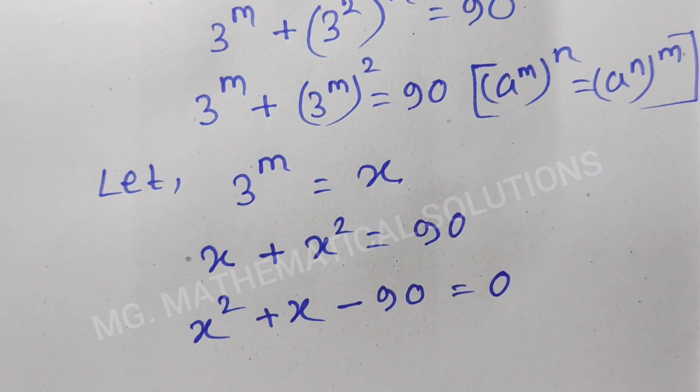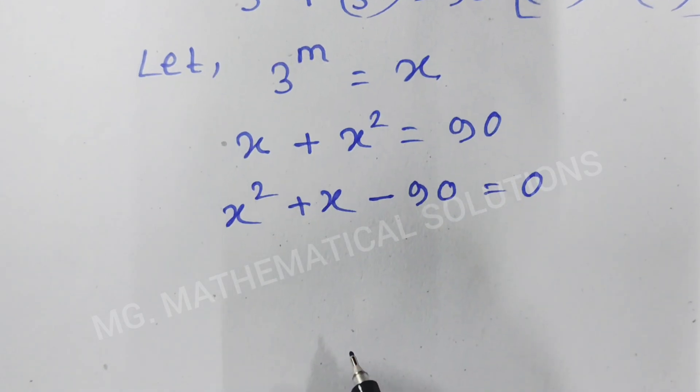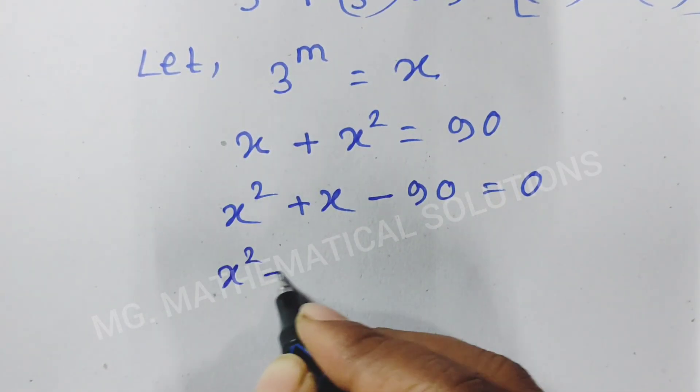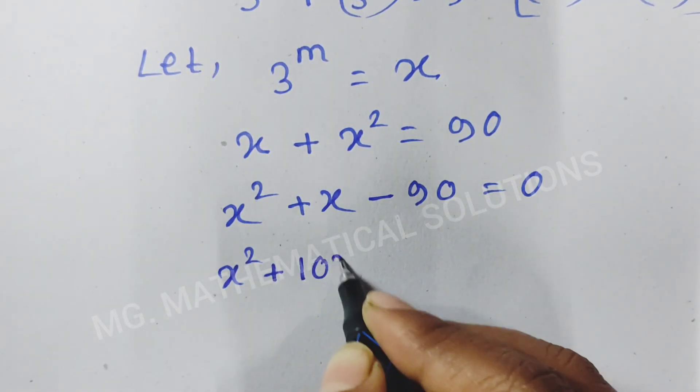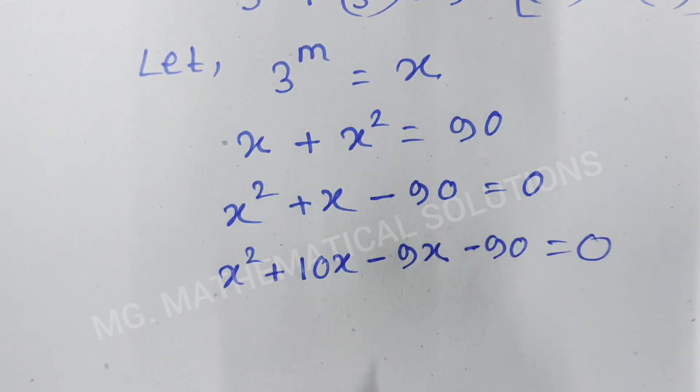So, we solve this equation by factorization method. x square plus 10x minus 9x minus 90 equal to 0.